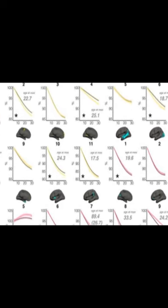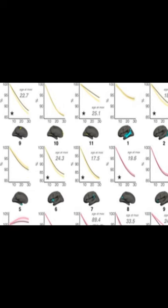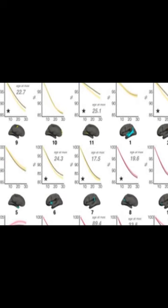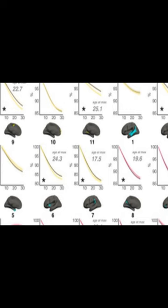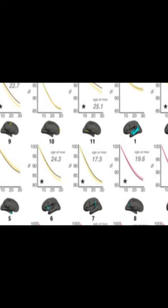The study found that the asymmetry of the cortex is largely stable throughout life, with the exception of a peak in early adulthood when the cortex becomes thicker on the left side than the right.